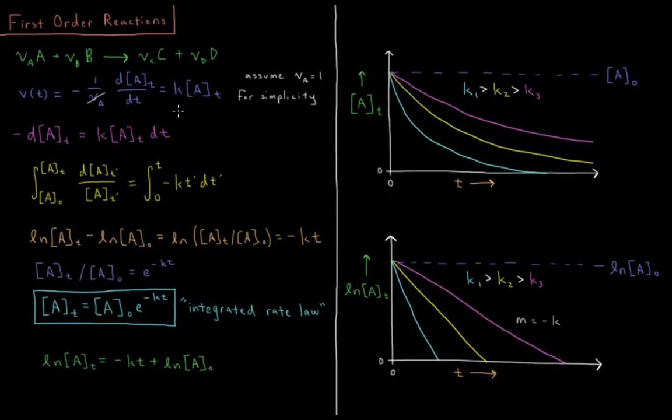So what we're going to do is try to do separation of variables and solve the integral to see what this concentration is as a function of time. So if we multiply both sides by dt, we have minus dA of t equals kA times dt. Divide both sides as well by A of t,